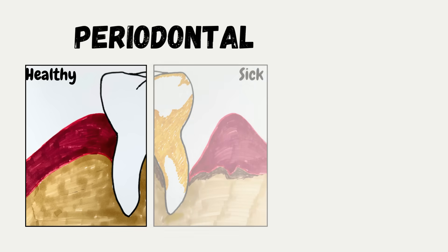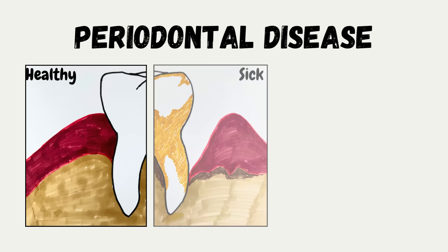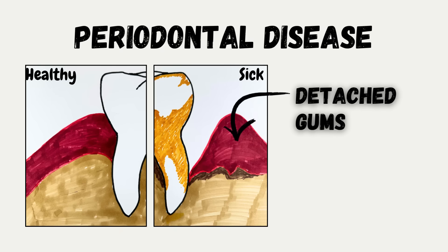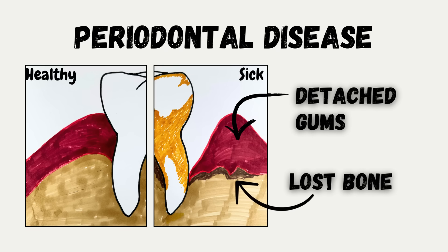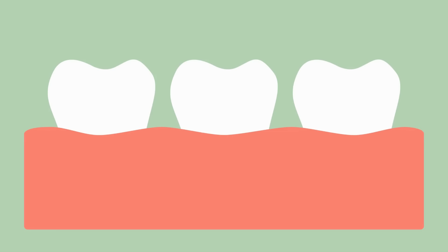The main cause of tooth loss for adults is periodontal disease, in which the gums can pull away from the teeth. The bones supporting the teeth can be lost, and the teeth may loosen or fall out.